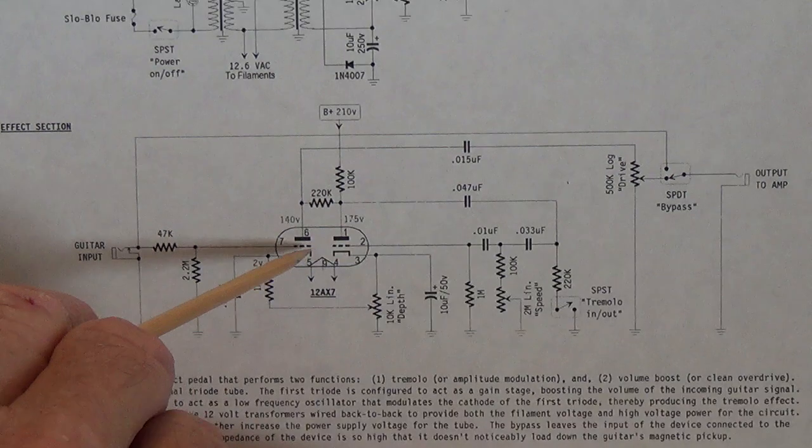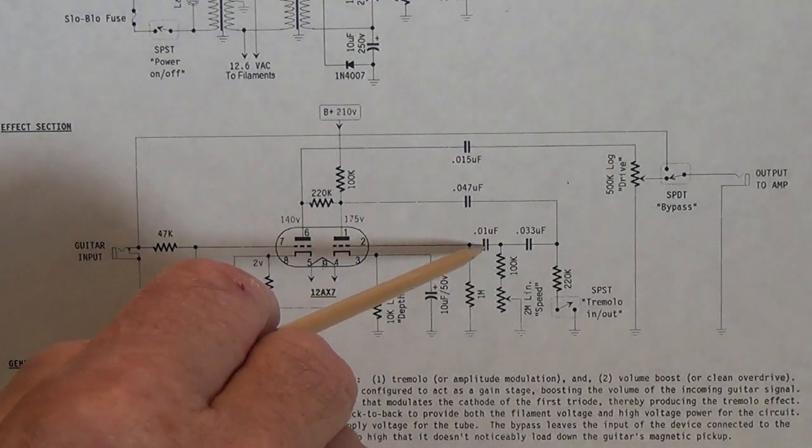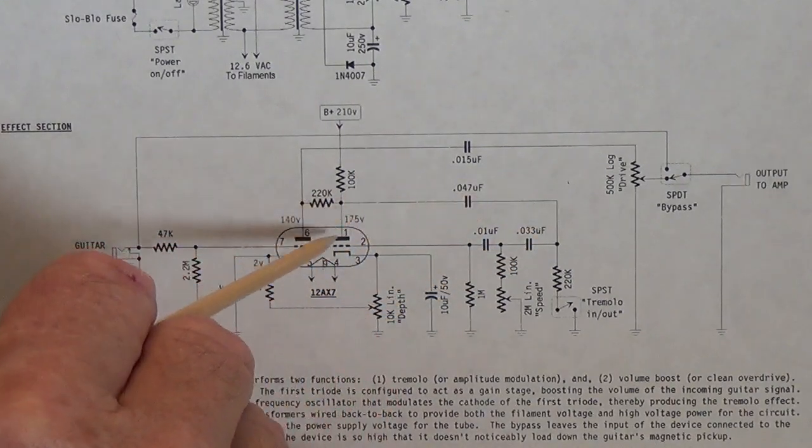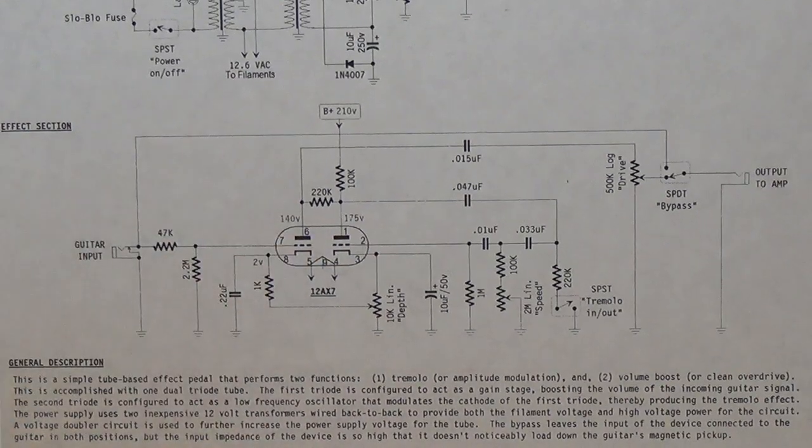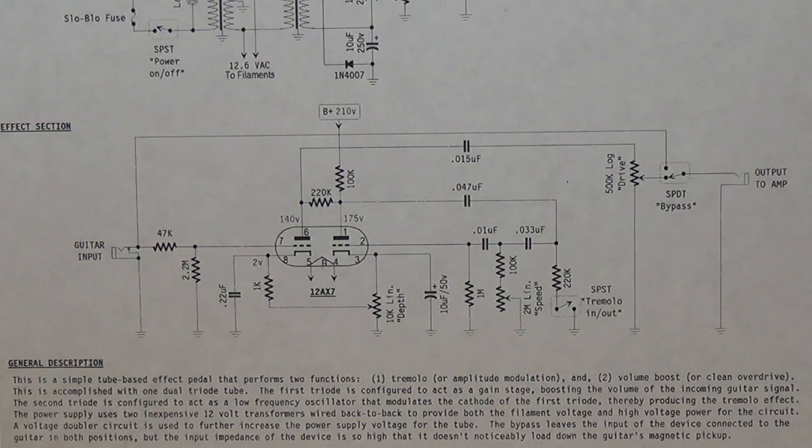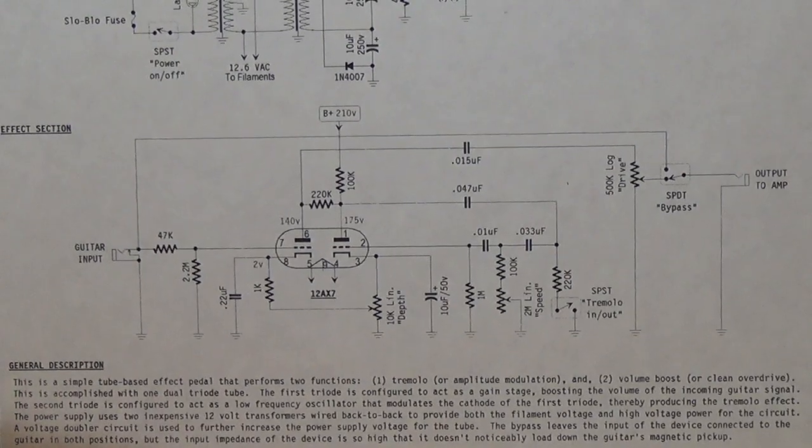The second stage is the tremolo oscillator which we see has the typical three capacitors in a loop between the grid and the plate. If you're at all uncertain about how this works I have created videos showing exactly how tremolo oscillators work so please check them out for clarification.